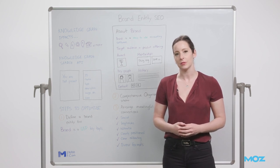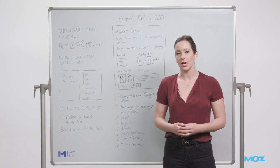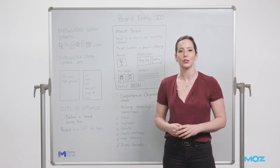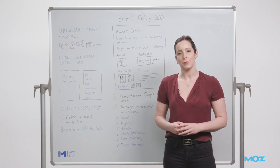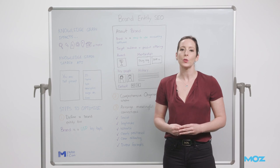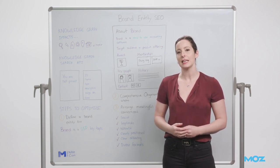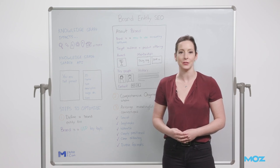So ask yourself: does Google know who your brand is? Are you a stranger, a familiar face, or a friend to Google? The best way to track if a brand is an entity, and if so in what context, is to query the brand name in the Google Knowledge Graph Search API daily and keep a record of the return results in your data warehouse.